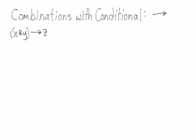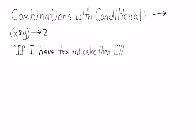Next, let's involve the conditional connective. In the first example, the antecedent of the conditional is a conjunction. Here, the condition is that x and y, and the consequent, or result, is z. Here's an example of a statement which has that logical form: if I have tea and cake, then, as a consequent, I'll have ice cream.